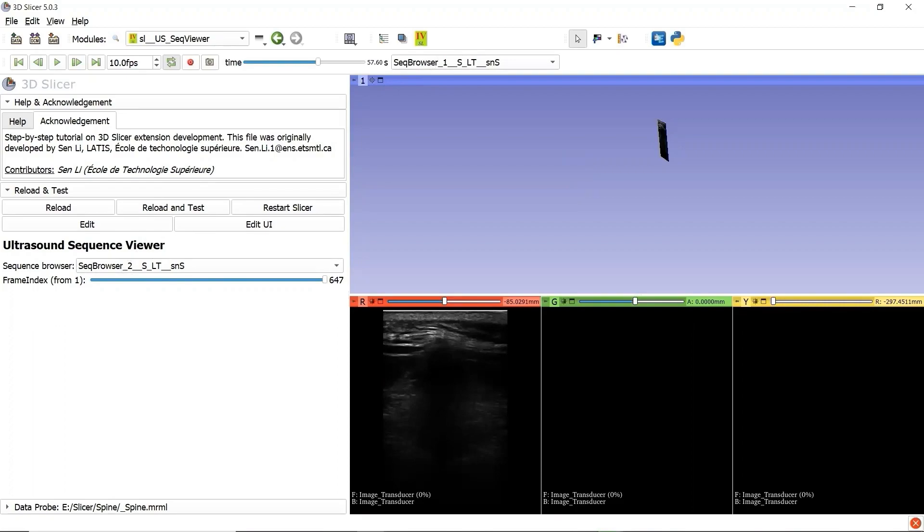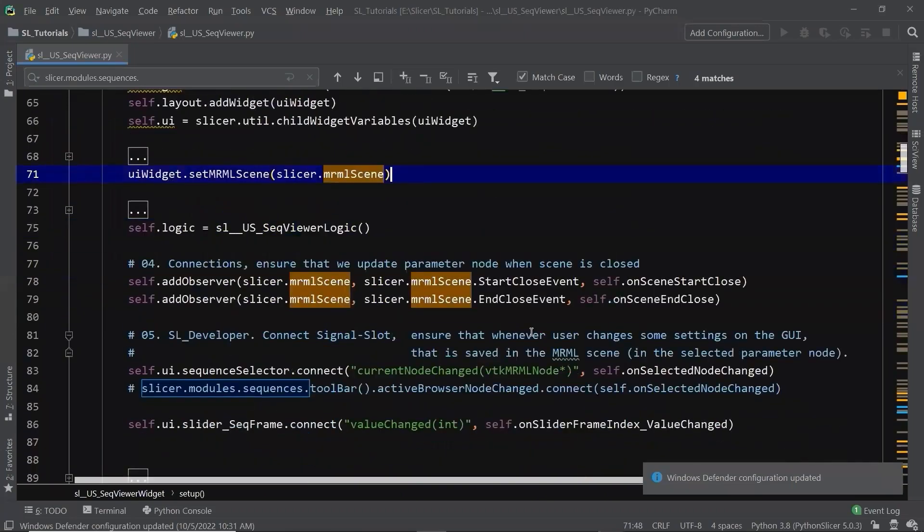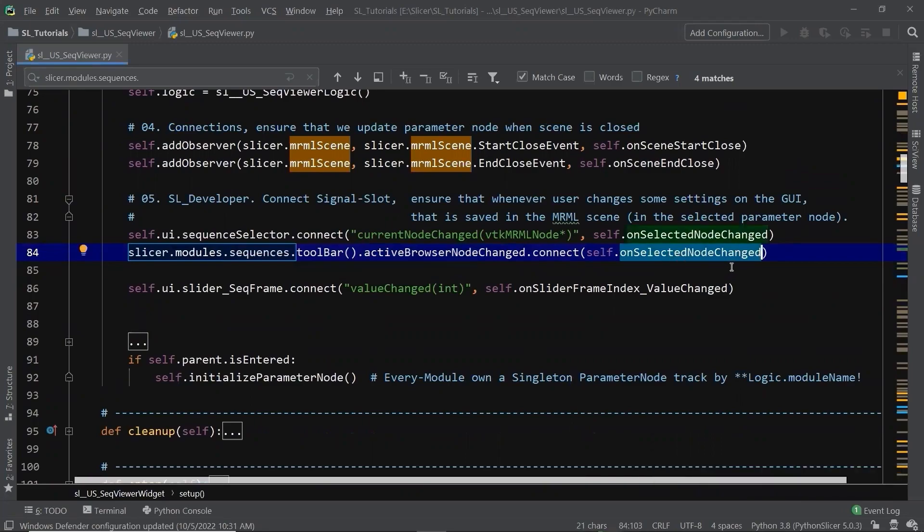Let's go back to PyCharm. We are in the widget class function setup. Let's go to step 5, where we can connect the signal of slider module sequences toolbar active border node chain to our slot function on selected node chain, so that when the Sequence Viewer given by 3D slicer changes, our module will update.